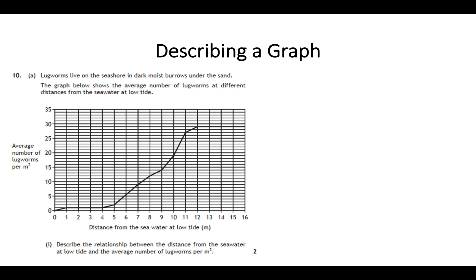Let's look at some examples of actually describing what's going on in a graph. Using the information from the previous slide, make sure that you read what the question is asking you. Sometimes people get put off by seeing a graph. It says that lugworms live on the seashore in dark moist burrows under the sand. The graph below shows the average number of lugworms at different distances from the seawater at low tide. You can see it's two sets of numbers, it's a line graph. Someone has recorded the average number of lugworms as the distance from the seawater increases, from zero meters to 16 meters away from low tide.